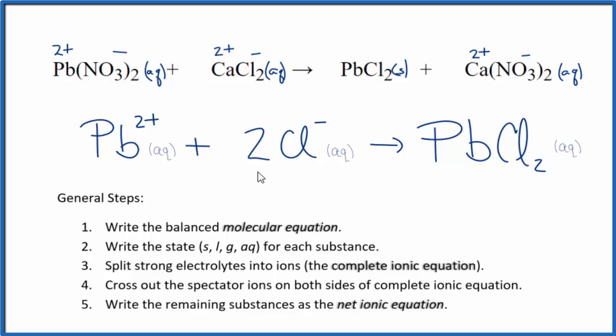This is Dr. B with the balanced net ionic equation for Pb(NO3)2 plus CaCl2, lead(II) nitrate plus calcium chloride. Thanks for watching.